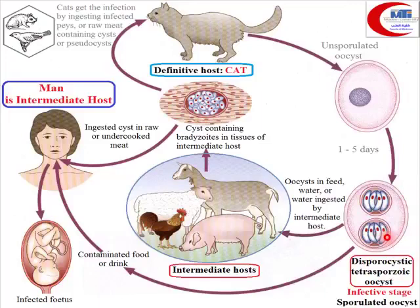Any intermediate host — any animal — can ingest this oocyst. When ingested, the content inside is released and transforms into trophozoites. The trophozoites enter nucleated cells and begin multiplying, forming a pseudo cyst, until the immune system becomes developed and forms a tissue cyst. This is a true cyst.